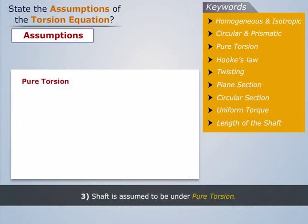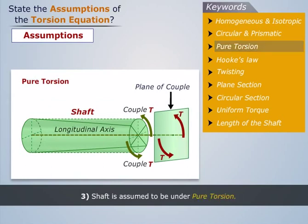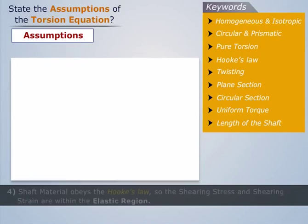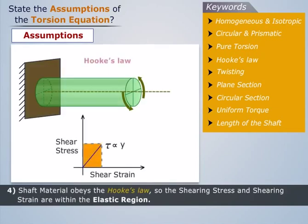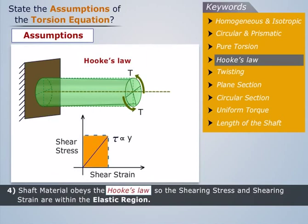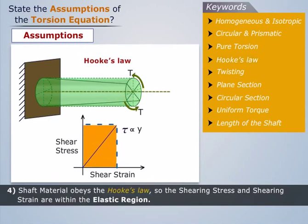Number 3: Shaft is assumed to be under pure torsion. Number 4: Shaft material obeys Hooke's law, so the shearing stress and shearing strain are within the elastic region.